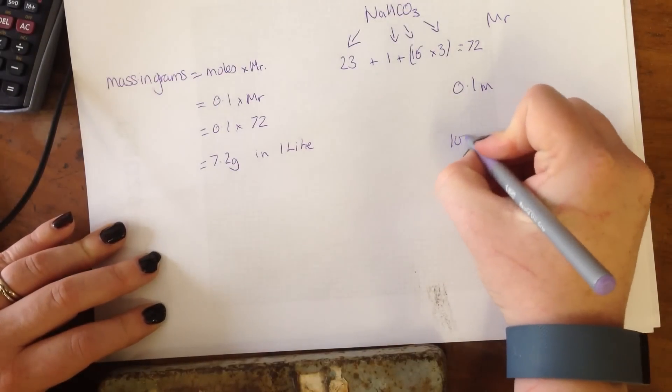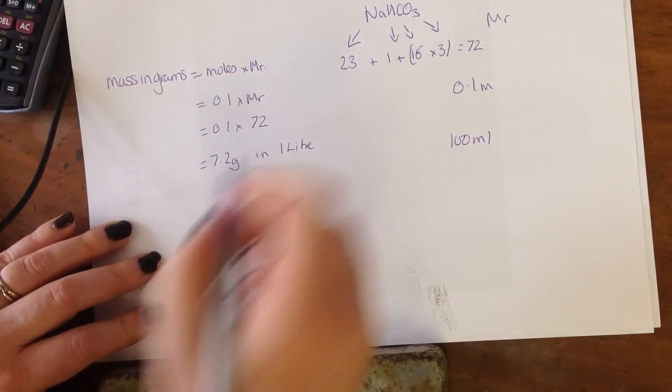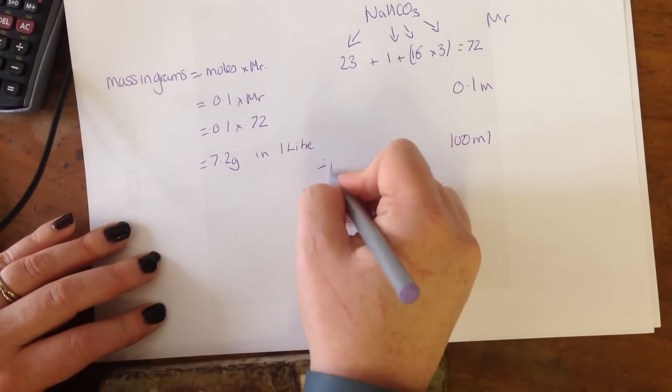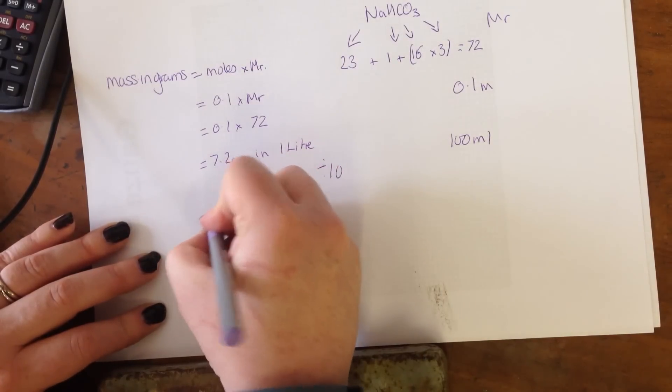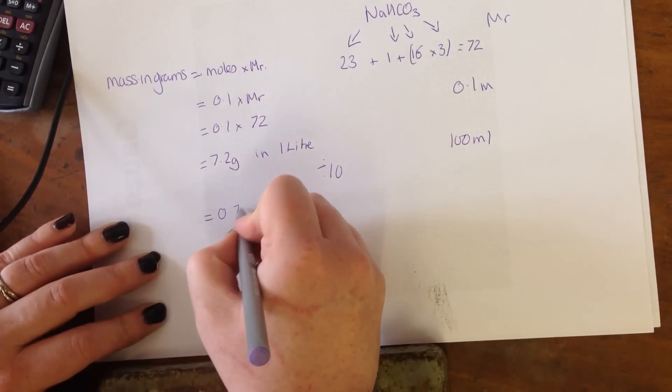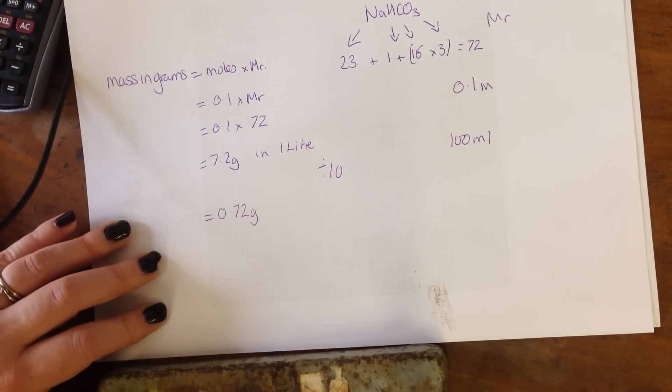And that is going to be in one liter of solution. Now I only want to make 100 ml of solution, so I need to divide that by 10. So I need to make 0.72 grams of sodium hydrogen carbonate in 100 ml.